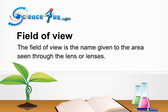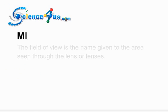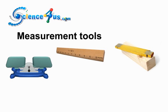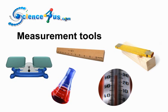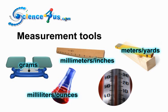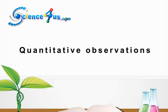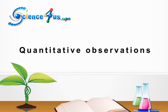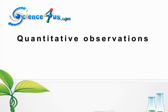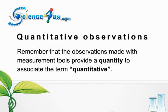Observations made using measurement tools such as a balance scale, ruler, meter stick, measuring cup, beaker, or thermometer all provide numerals to represent the quantity of grams, millimeters, inches, meters, yards, milliliters, ounces, or the amount of degrees Celsius or Fahrenheit. These are called quantitative observations and they provide specific information about the object or substance — matter — being observed. Remember that observations made with measurement tools provide a quantity, to associate the term quantitative.